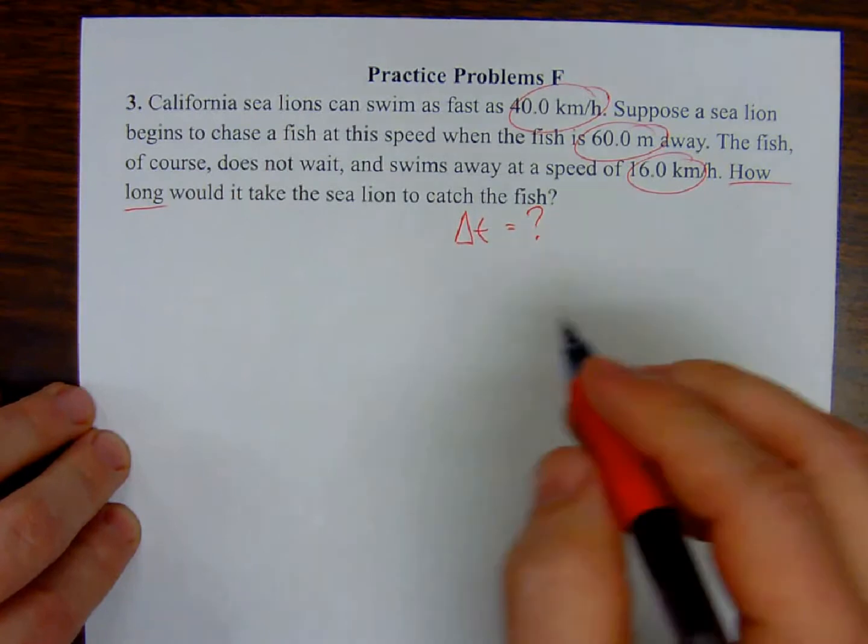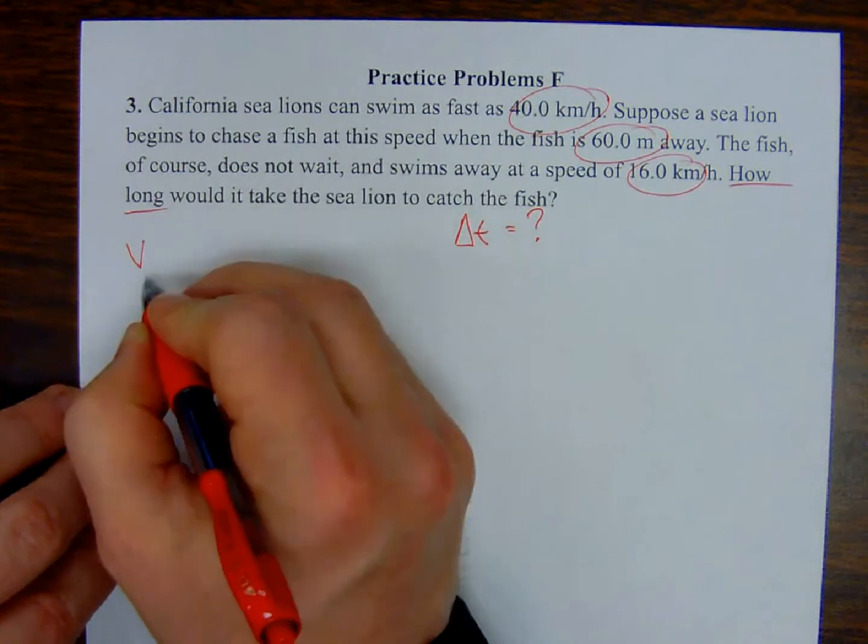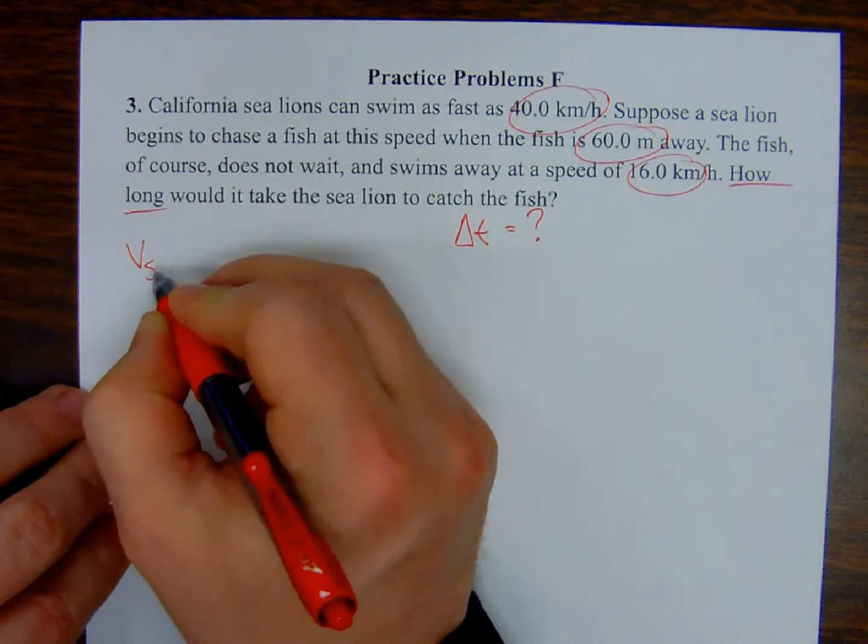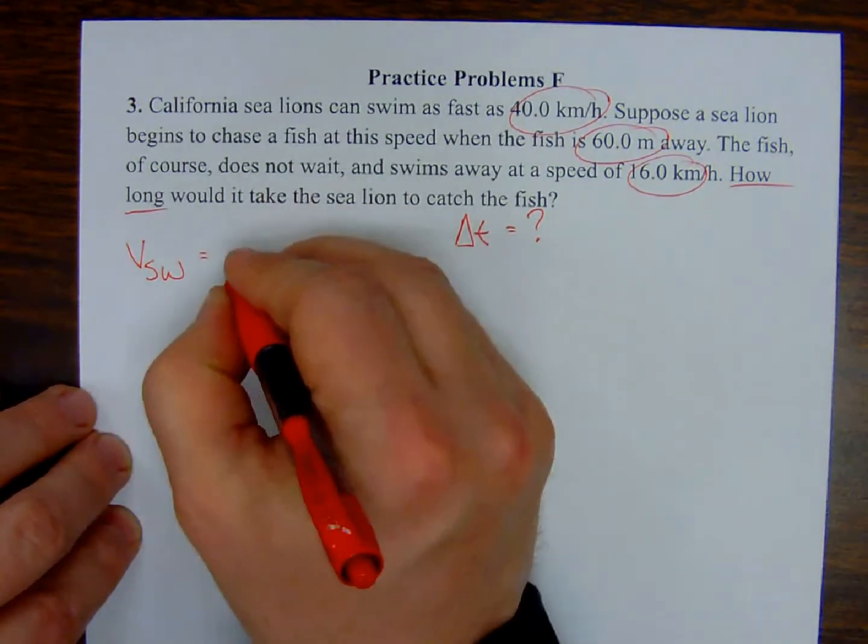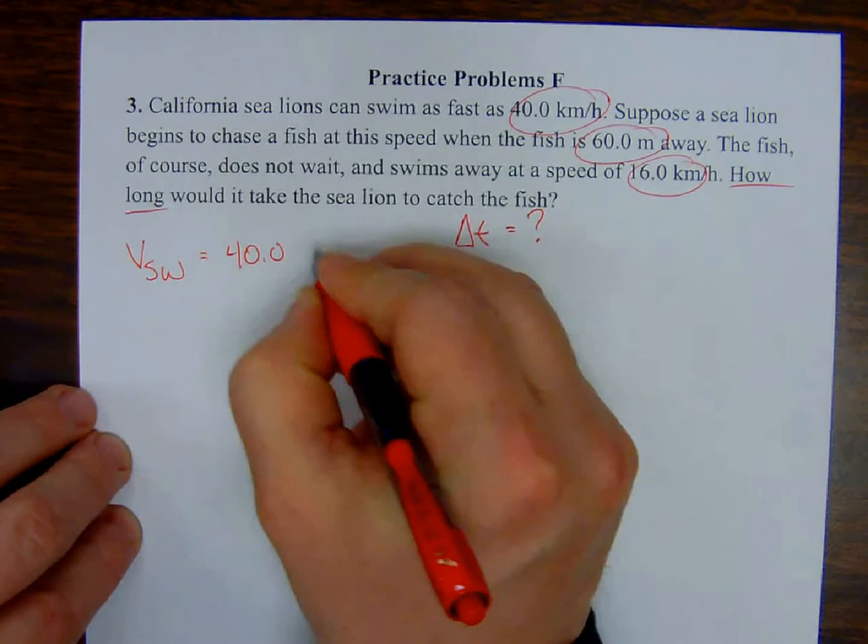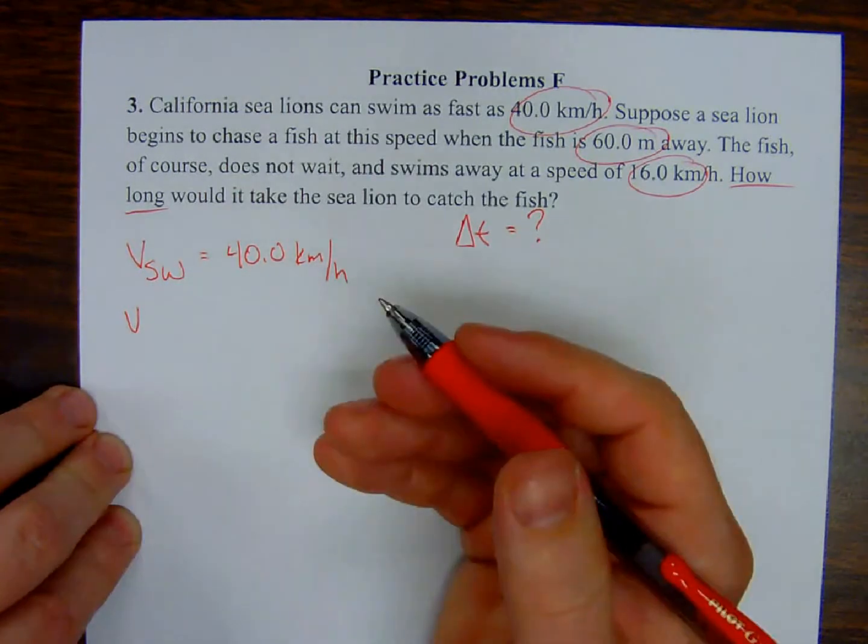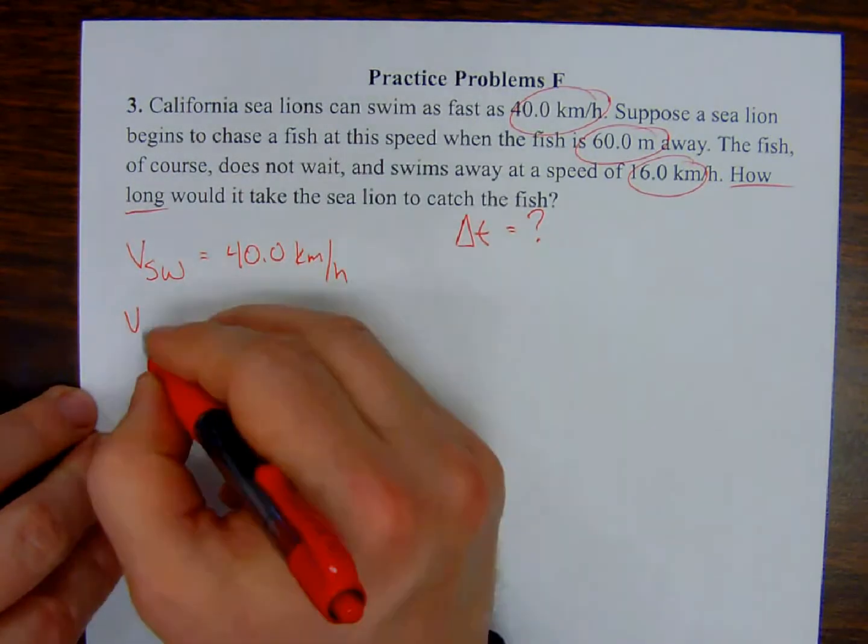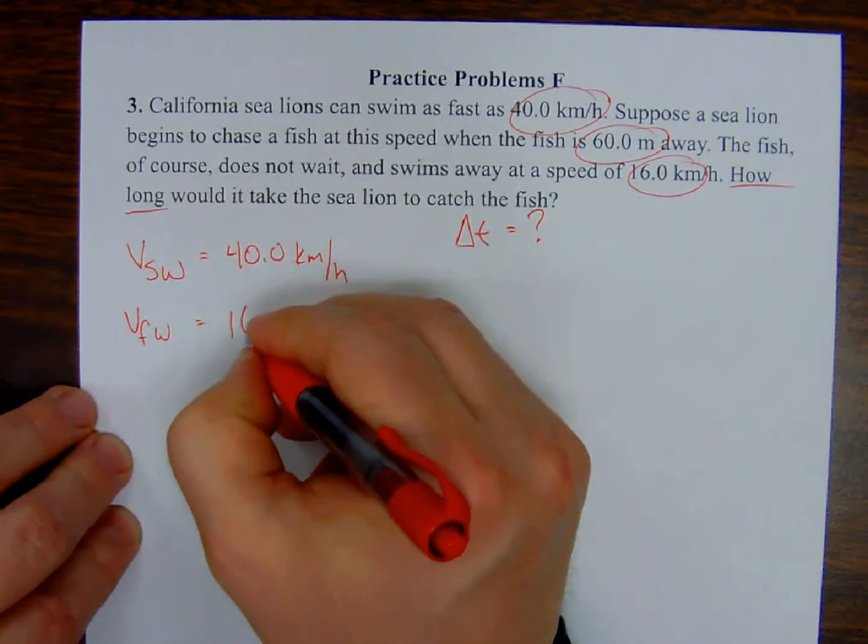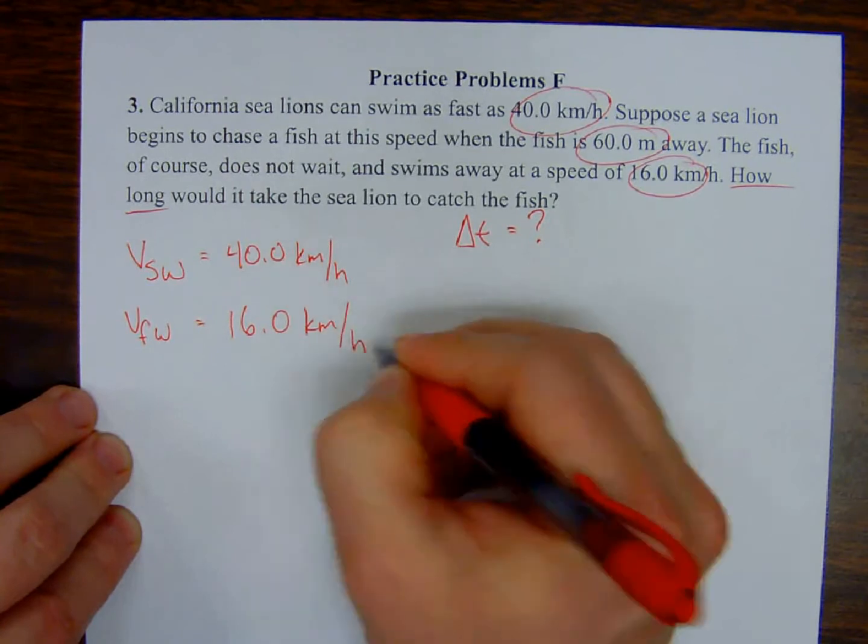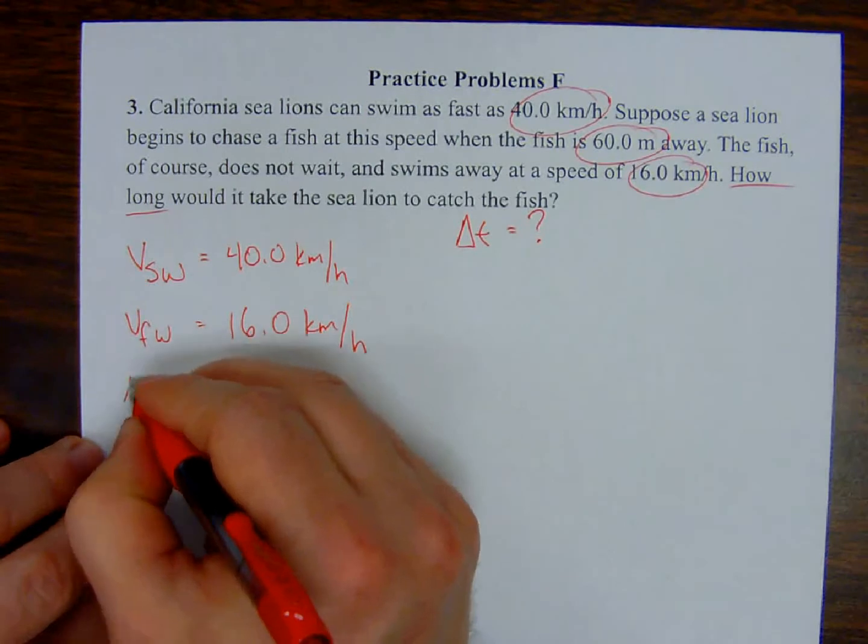I have a velocity of the sea lion, let's say with respect to the water, being 40.0 km per hour. And we also have a velocity of the fish with respect to the water, not quite as fast, 16.0 km per hour. And we also have a displacement, which is 60 meters.